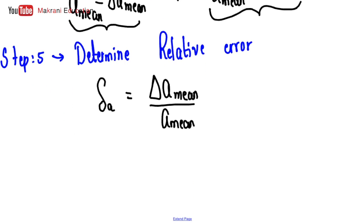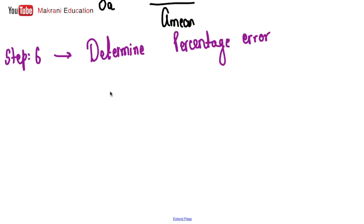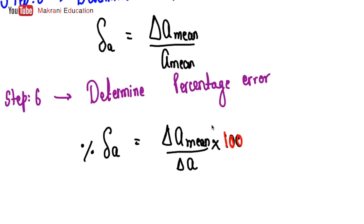Step 6 is to determine percentage error. The formula for percentage error is: percentage delta_A equals (delta_A_mean over A_mean) multiplied by 100. The difference from relative error is that you just multiply the relative error by 100 to get the percentage error.